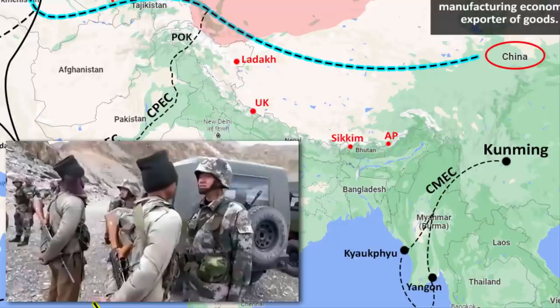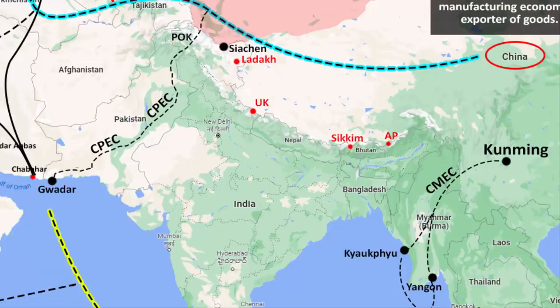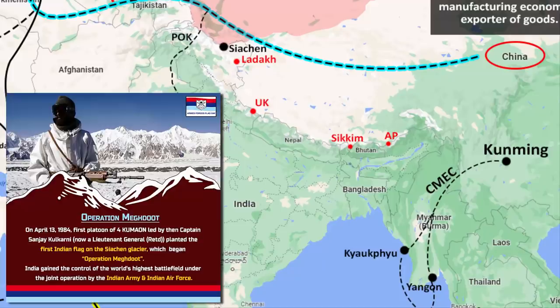Up in those high-altitude, bone-chilling cold regions, no other country will come to support India. Among the five veto countries, leaving aside China and Russia, American, British, or French troops are simply not capable of cold-weather mountain warfare — they cannot operate above 18,000 feet. Siachen Glacier is the highest battleground on Earth, and the Indian Army has been operating there with a base since 1984. There is no Pakistani soldier, no Chinese soldier on Siachen — only the Indian Army.